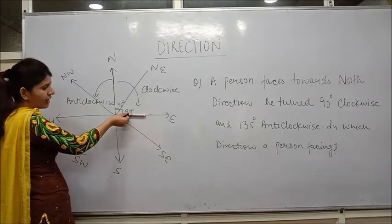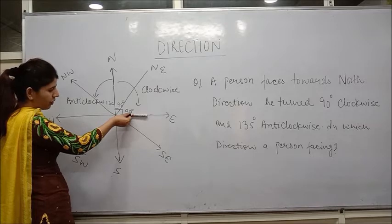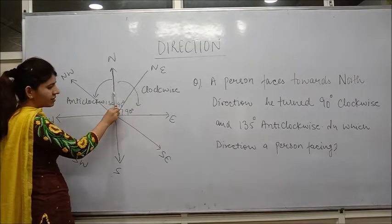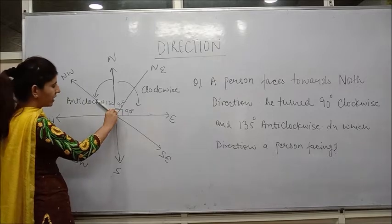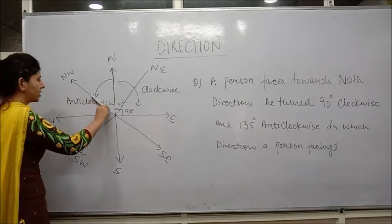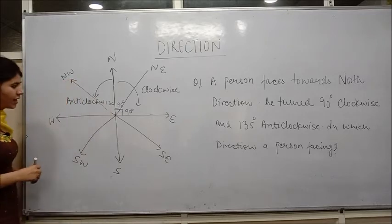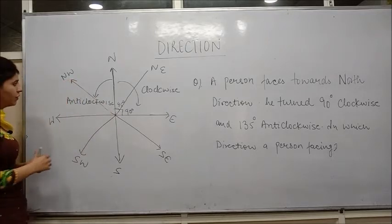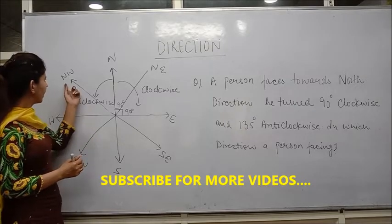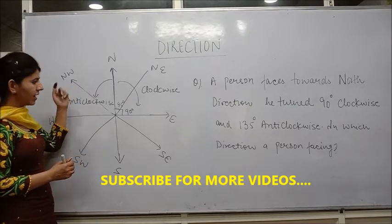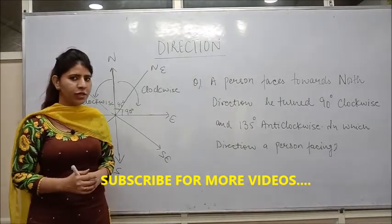From this point, he turned 135 degrees anticlockwise. From east to north he covers 90 degrees, and 90 plus 45 is 135. That means the person comes to the northwest direction. So finally, the person is facing in the northwest direction. This is the way how to solve direction questions.